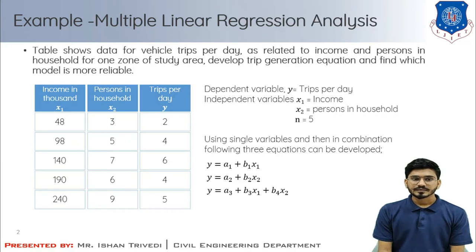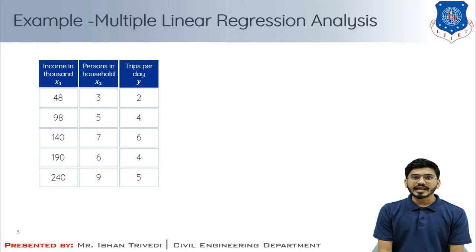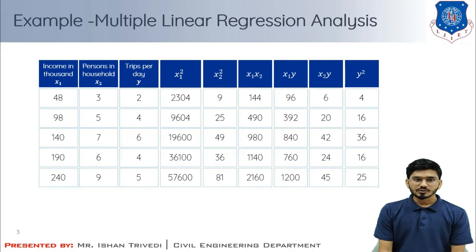We have three basic inputs: income in thousands x1, persons in household x2, and trips per day y. In multiple linear regression analysis we compute correlations: x1y, x2y, x1x2, x1 squared, and x2 squared. The table columns are x1 squared, x2 squared, x1x2, x1y, x2y, and y squared.